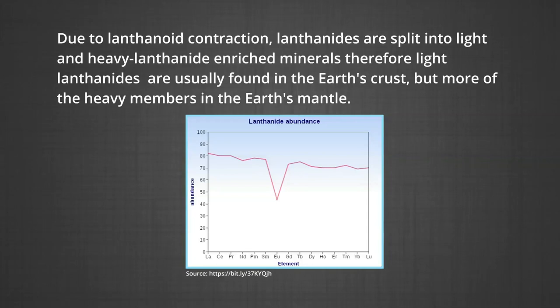Light lanthanides are usually found in the earth's crust, but more of the heavy members are found in the earth's mantle. The graph shows the relative abundance of the lanthanides. The chemistry of the actinides is much more complicated. The complication arises partly owing to the occurrence of a wide range of oxidation states in these elements and partly because their radioactivity creates special problems in their study. The two series will be considered separately.